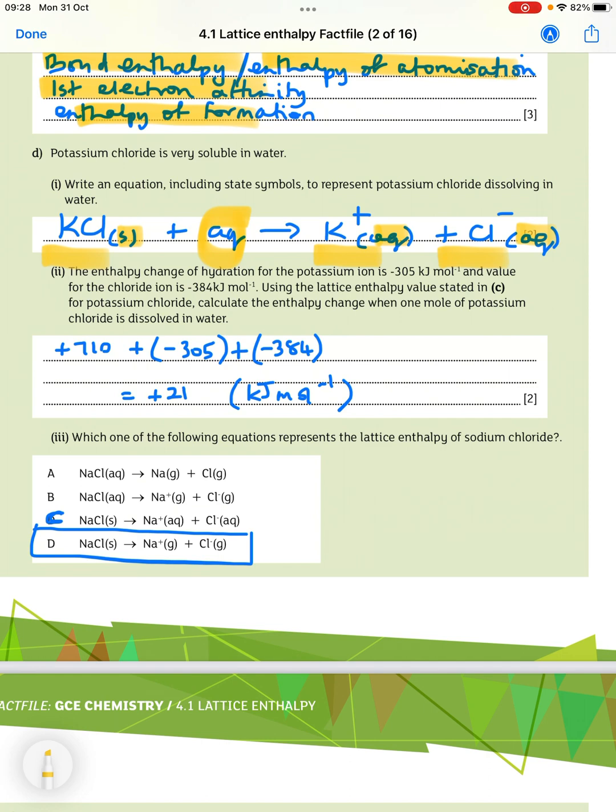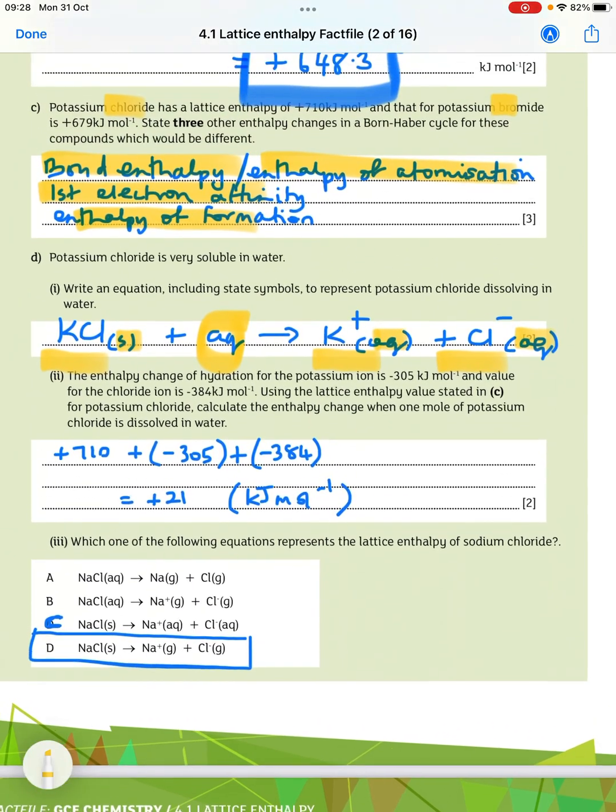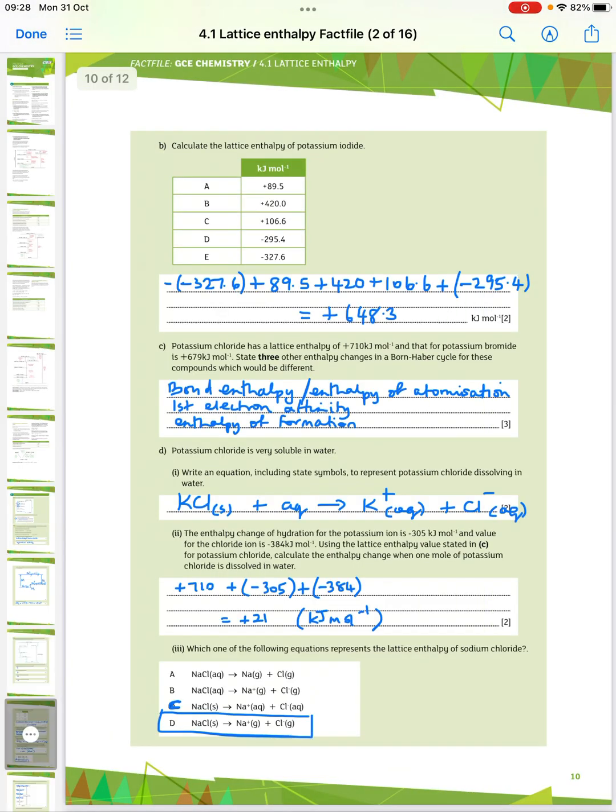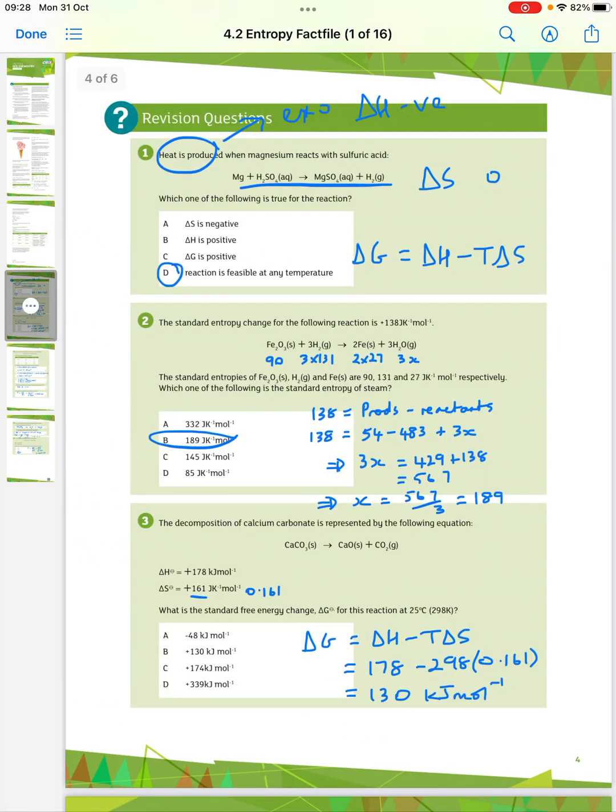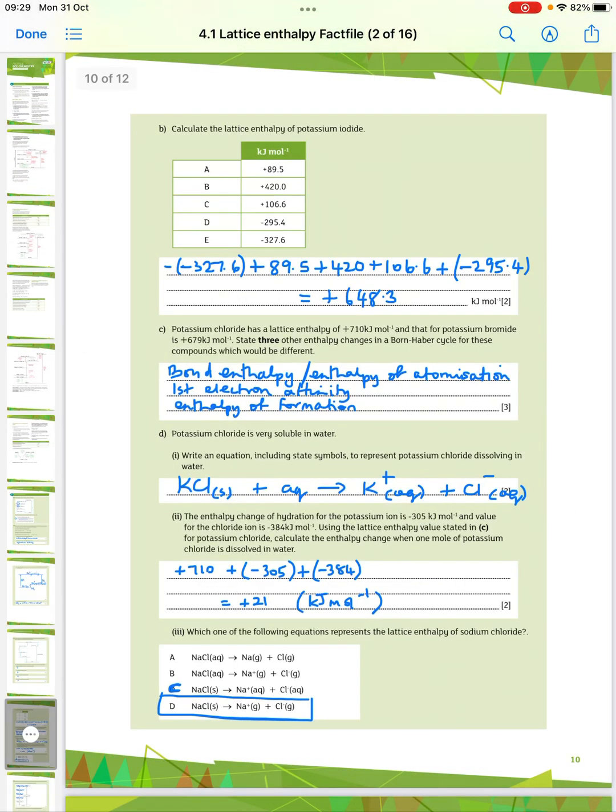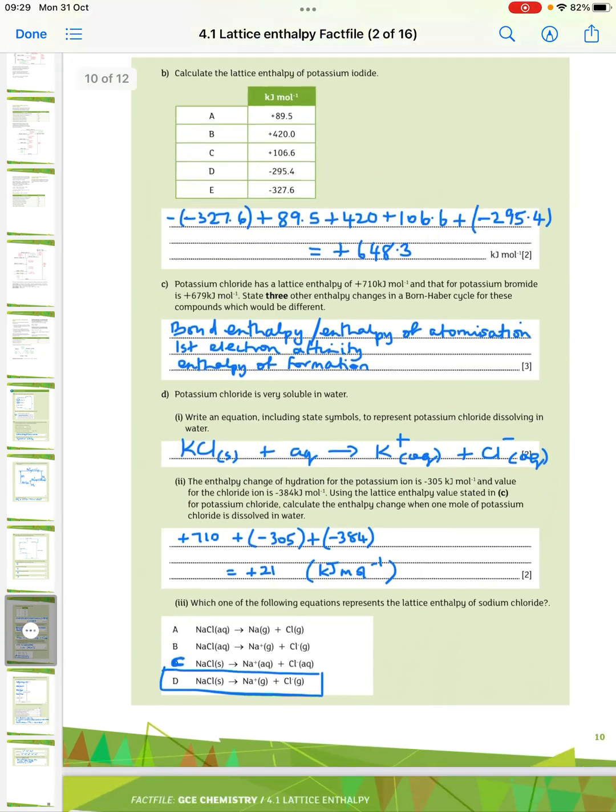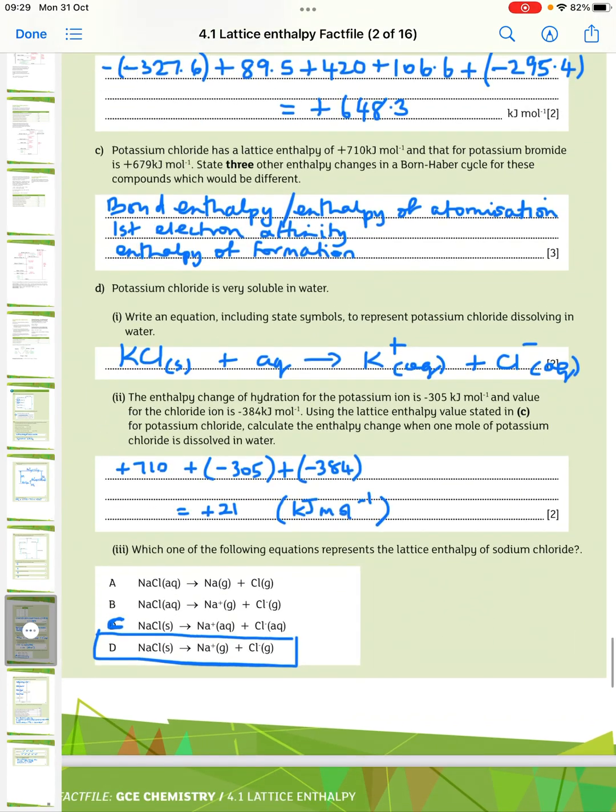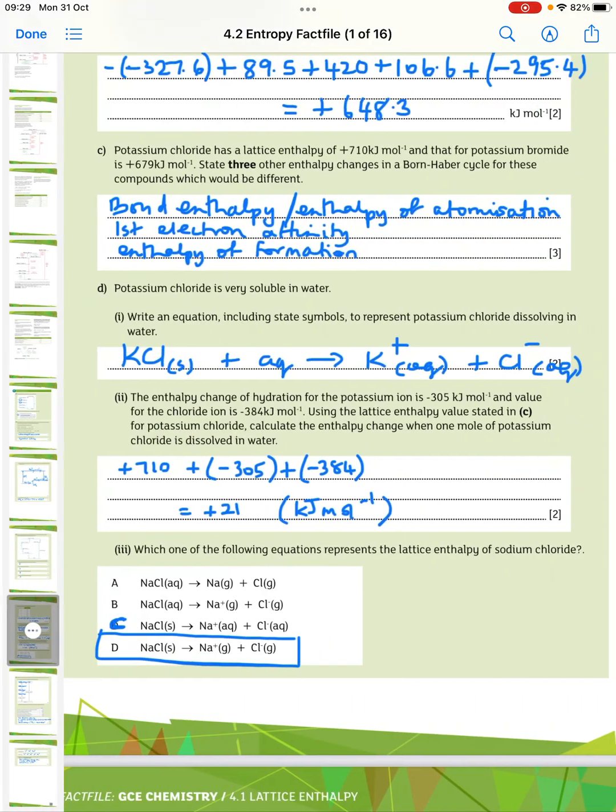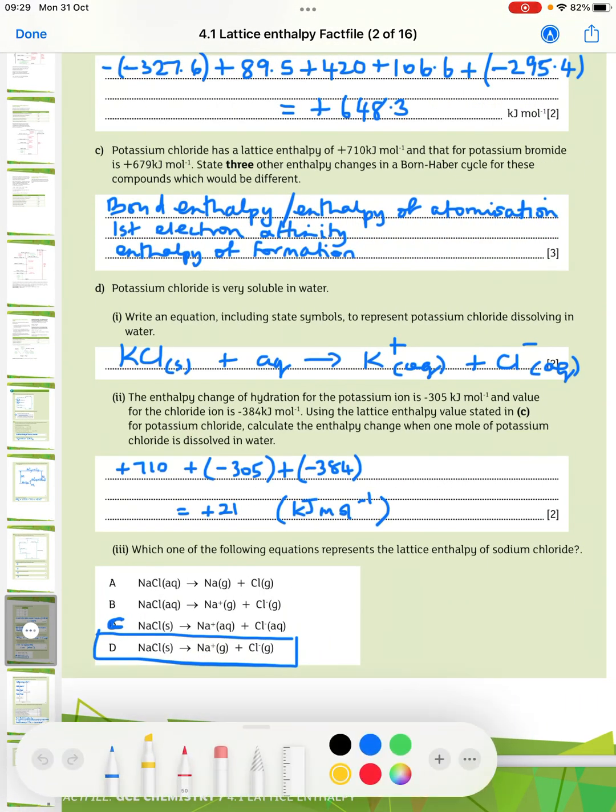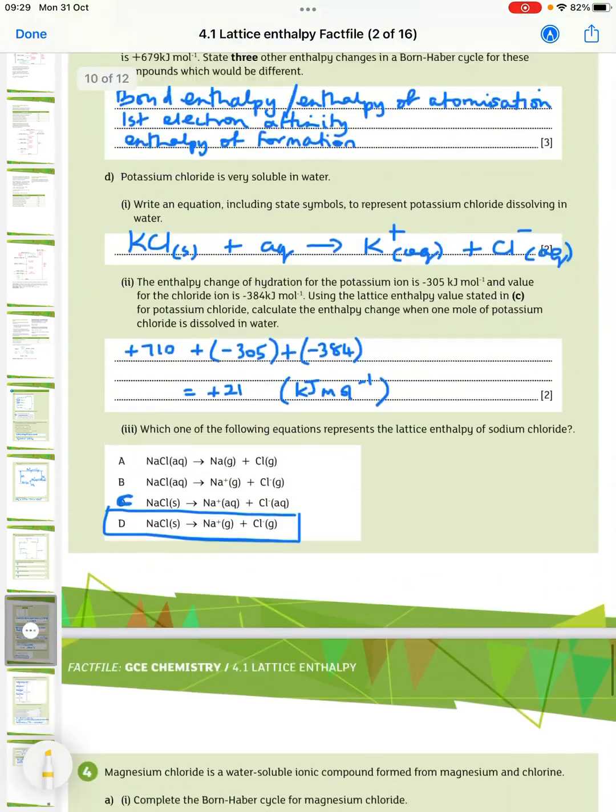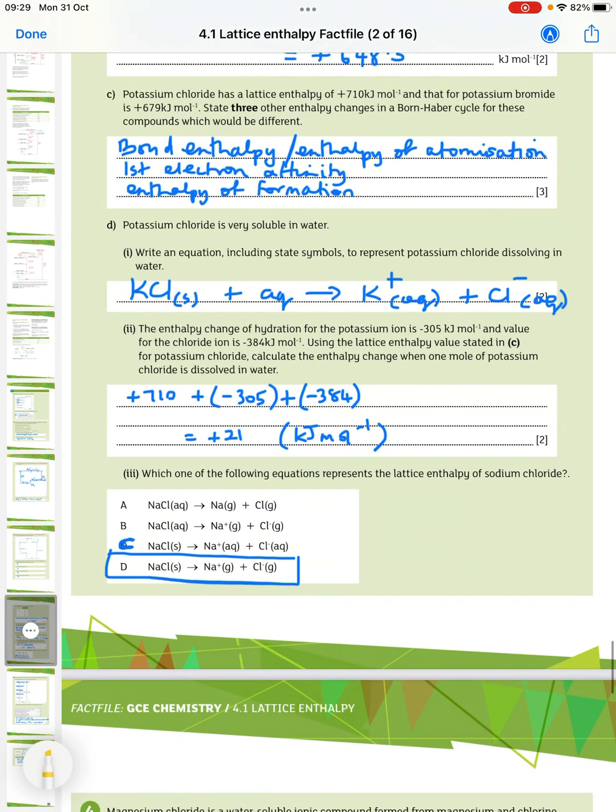And the enthalpy change of hydration for the potassium ion is minus 305, and the value for chloride ion is minus 384. Using the lattice enthalpy value stated in C for potassium chloride, calculate the enthalpy change when one mole of potassium chloride is dissolved in water. In C, it tells you that the value is 710. And then minus 305 minus 384 gives you plus 21, and that's kilojoules per mole.